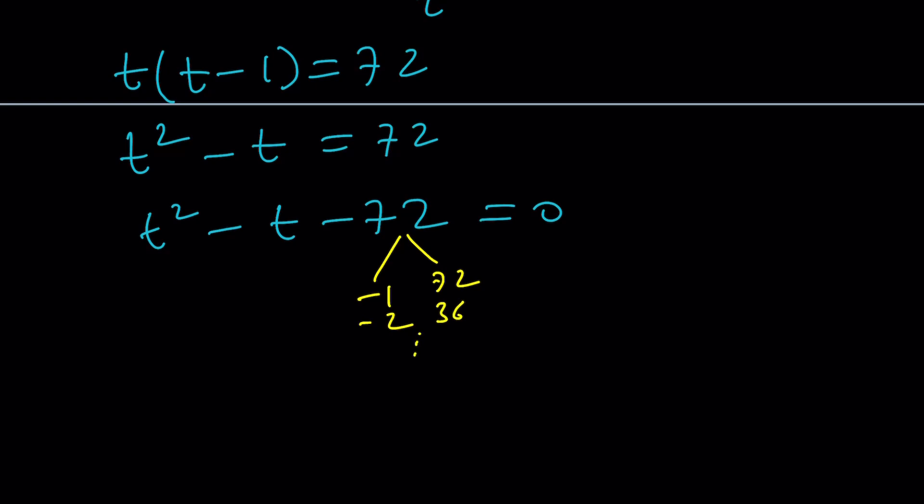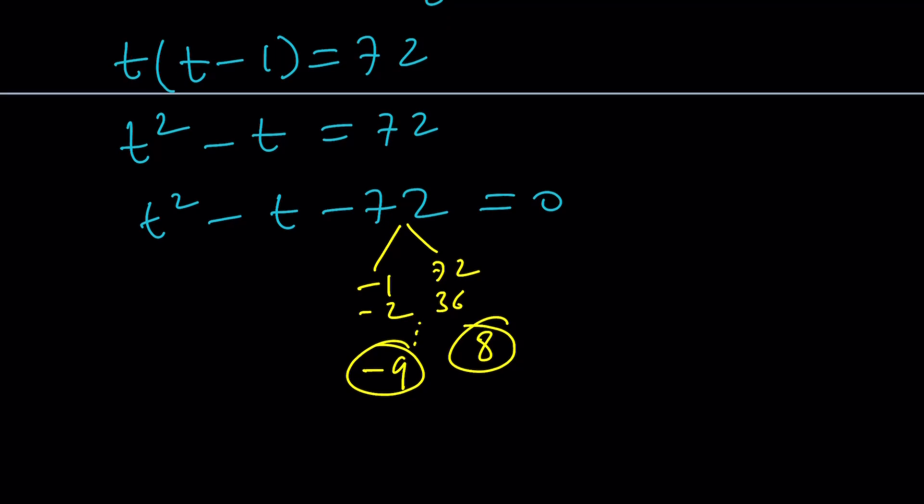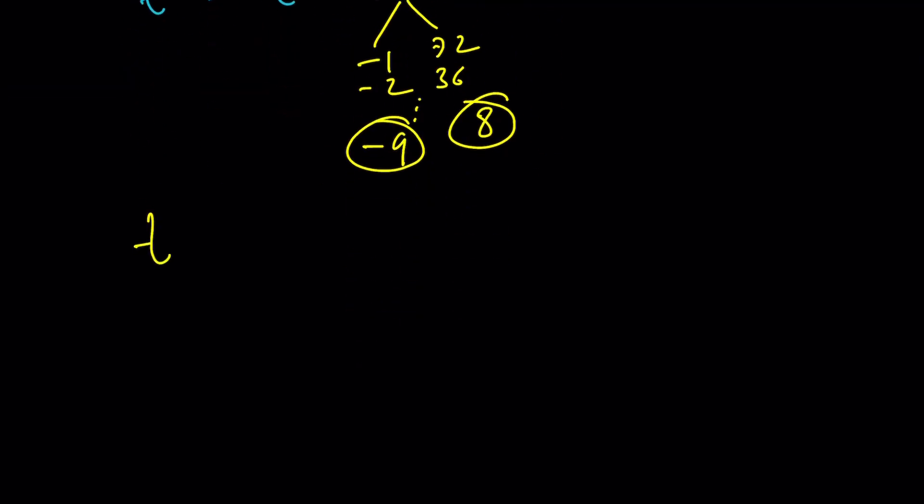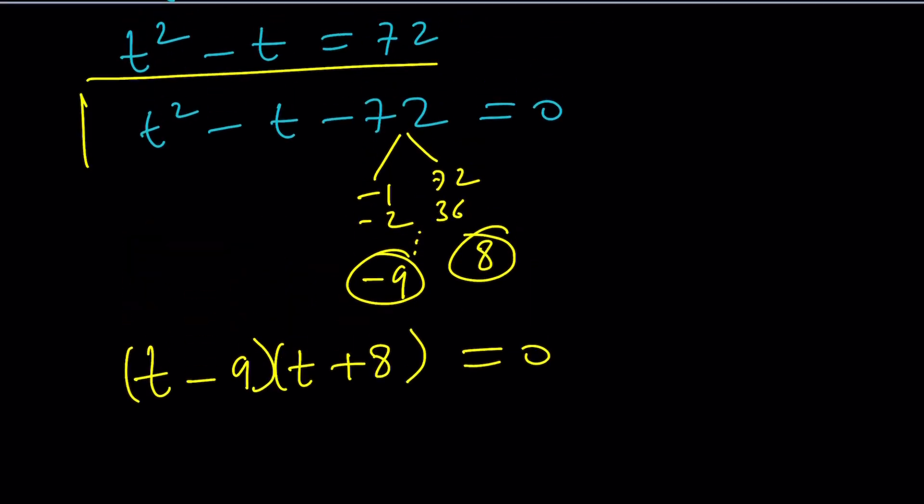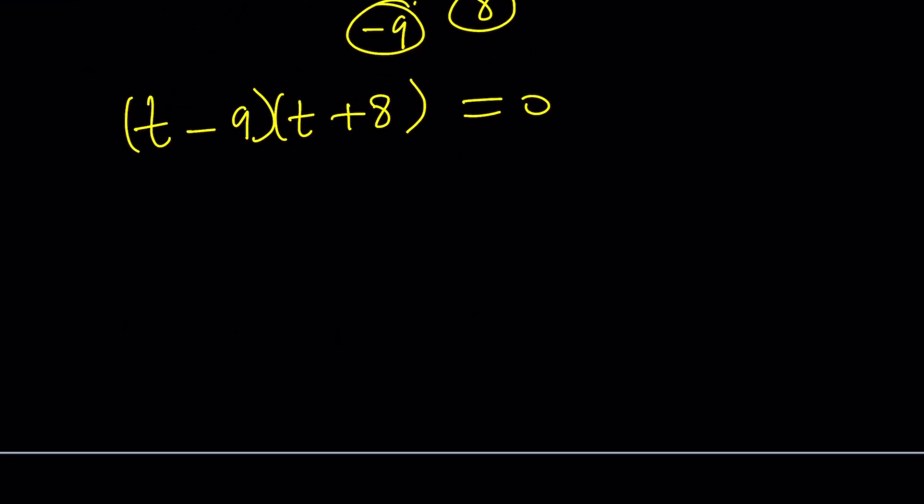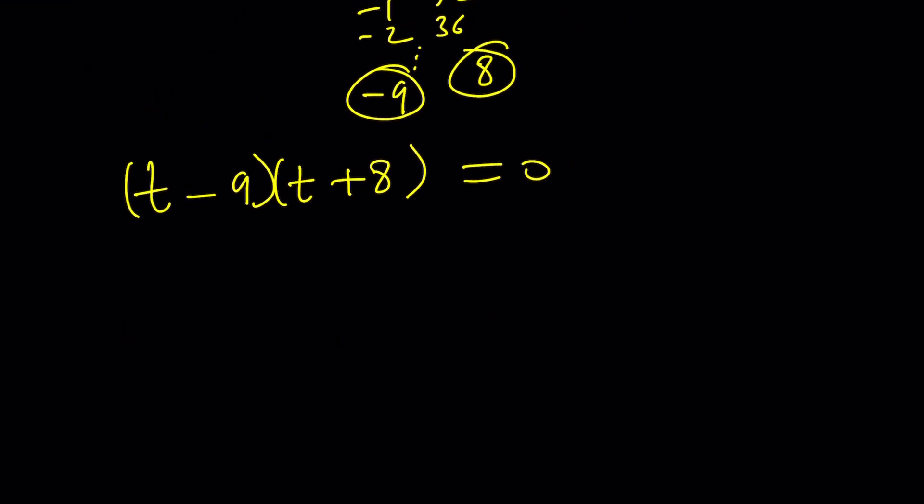And in this case, the numbers would be negative 9 and 8 because their sum is negative 1. Makes sense? And obviously, their product is negative 72, right? So, from here, we get t minus 9 and t plus 8 as our factors. Now, notice that if you go ahead and distribute this, you're going to get that. So, it actually checks. You don't have to check your work every time, but sometimes it's a good idea.